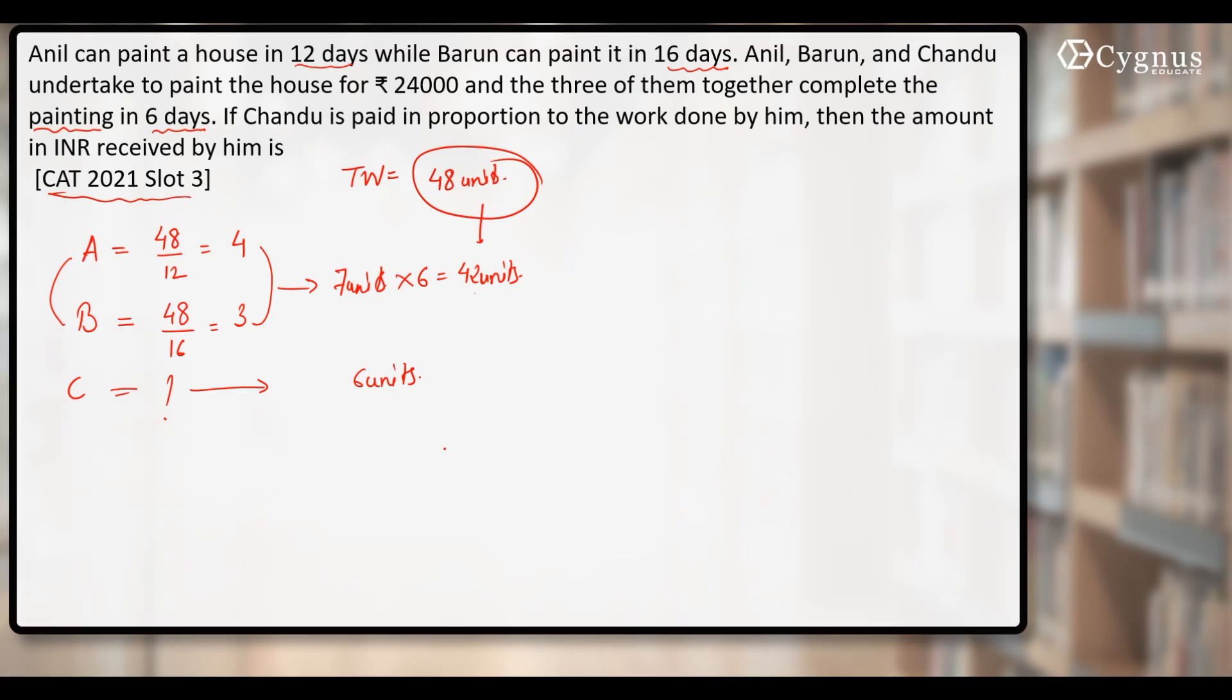Now what do you want to calculate? The amount that Chandu is going to receive out of 24,000. If you look at Chandu's share out of total work, he has done 6 units out of 48.